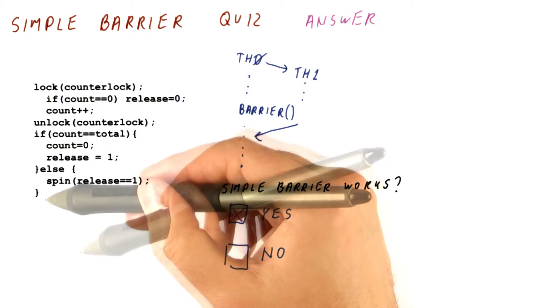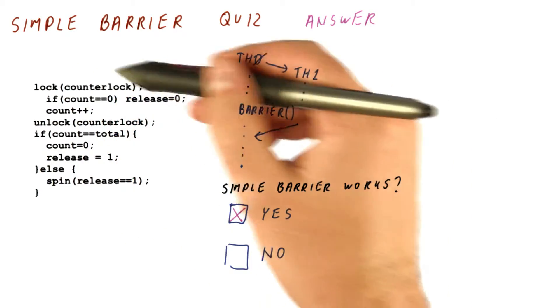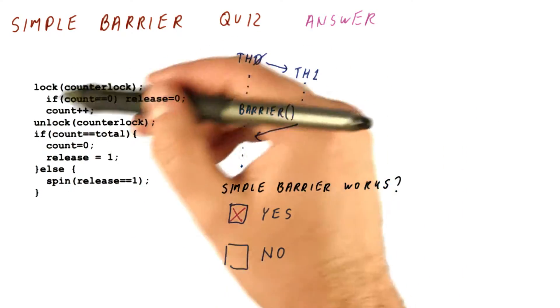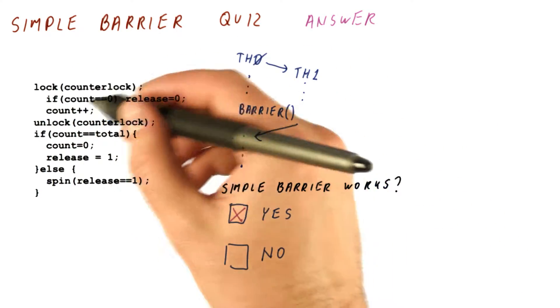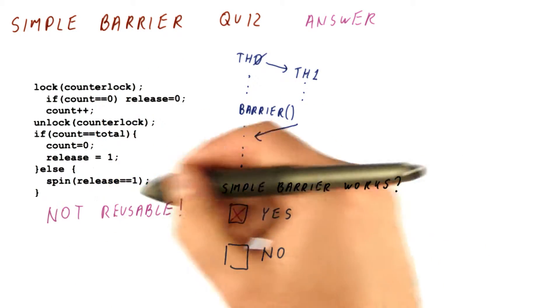Either way, nobody gets stuck. The reason why the simple barrier is not entirely correct is not that it doesn't work on the first try, it's that it's not reusable.